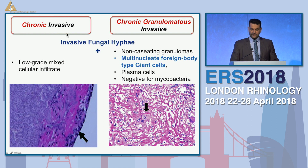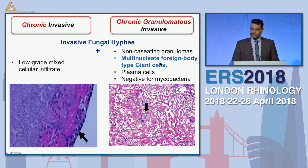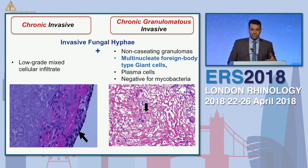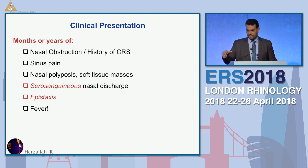The chronic invasive and chronic granulomatous invasive look similar in that both show tissue invasion with angioinvasion. However, you will see giant cells and granulomas in the chronic granulomatous invasive. The distinction between both in terms of response to treatment and how they interact with tissues is not very clear, so you won't see much clinical difference between the two presentations.